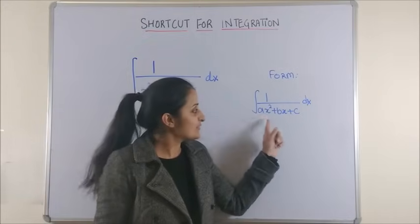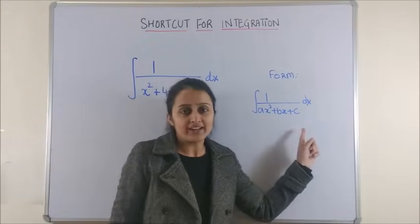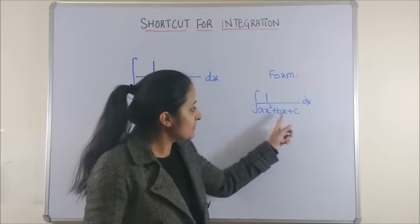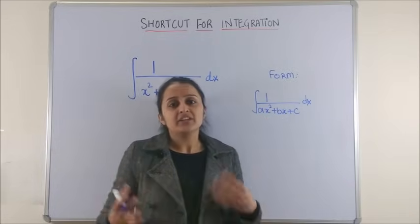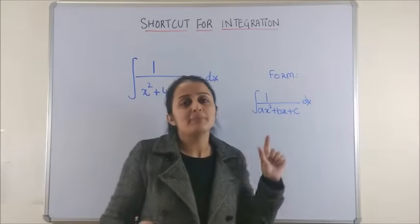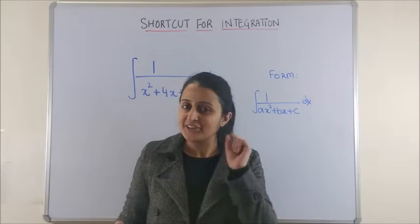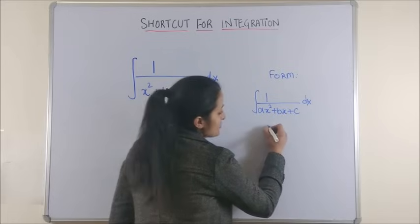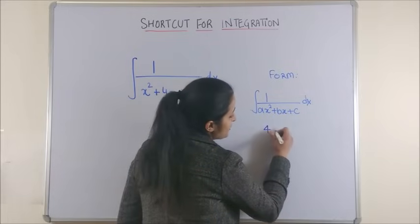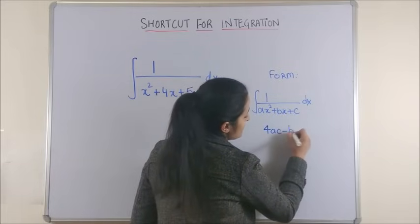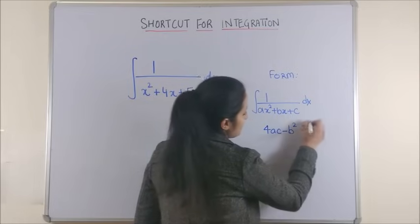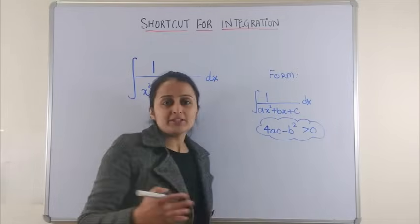We are going to address this form which is one upon the quadratic, that is ax square plus bx plus c. In the conventional way you usually complete the square and then apply the relevant formula. However, here there is one golden rule: you will have to check 4ac minus b square should be positive. Very simple to remember, it is actually like your discriminant with the opposite sign.